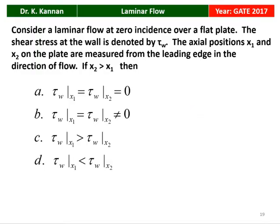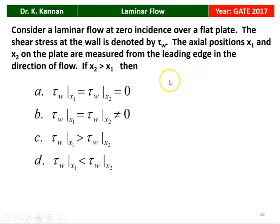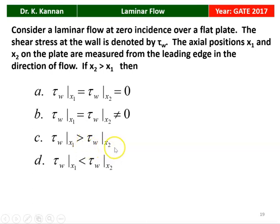This question is from the 2017 GATE question paper. Consider a laminar flow at zero incidence over a flat plate. The shear stress at the wall is denoted by tau_w. The axial positions X1 and X2 on the plate are measured from the leading edge in the direction of flow. X1 is a particular distance from the leading edge. X2 is just beyond X1. If X2 is greater than X1, we have four options for the wall shear stress.